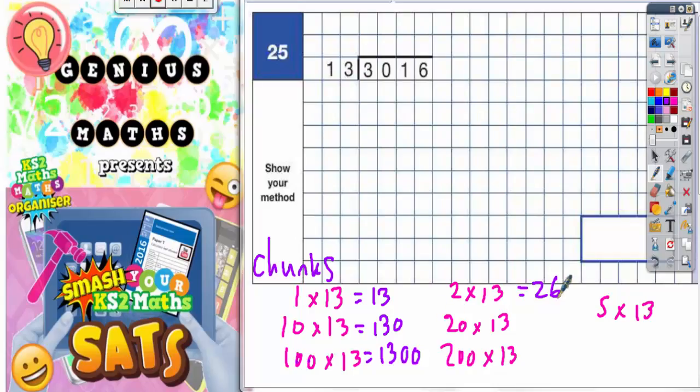2×13 is going to be 26, 20×13 is going to be 26 but with 1 zero on the end, and 200×13 is going to be 26 but with 2 zeros on the end, so 2,600.